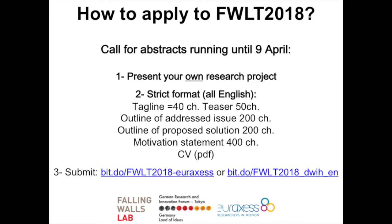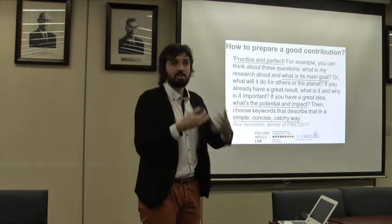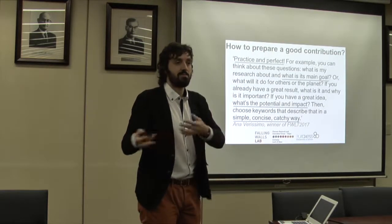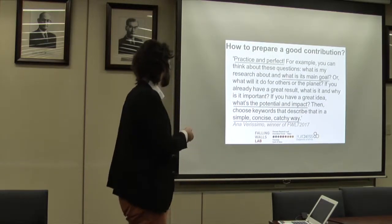You have a maximum of 200 characters for the problem you are addressing, and a maximum of 200 characters for the solution you propose. This is very short — probably around 40 to 50 words each. So: practice and perfect. Write something down, see if it works on your colleagues, then write it down again if it doesn't. You need to address key points: what is the goal of your research project, what is the potential and impact, and how to describe these complex processes in a simple, concise, and catchy way.